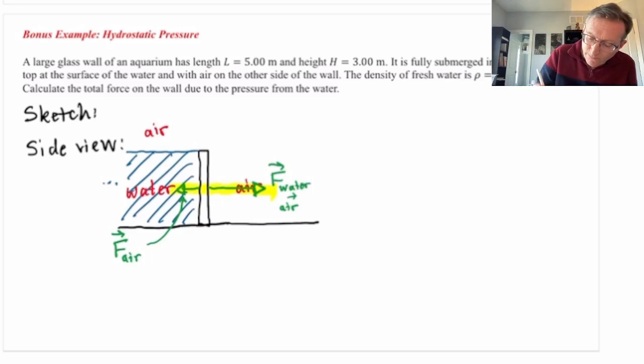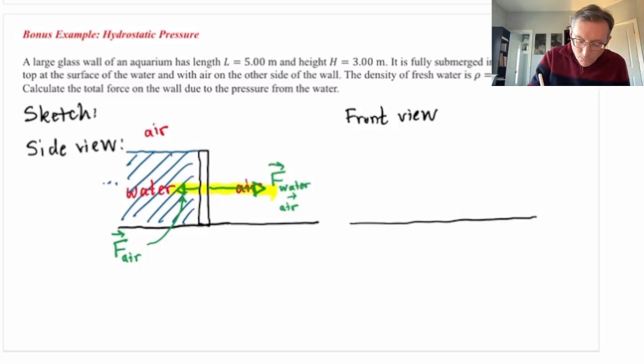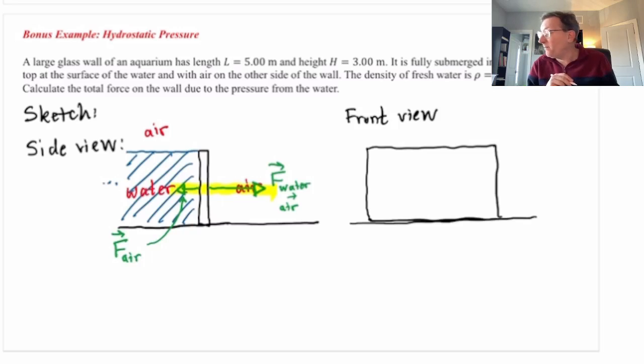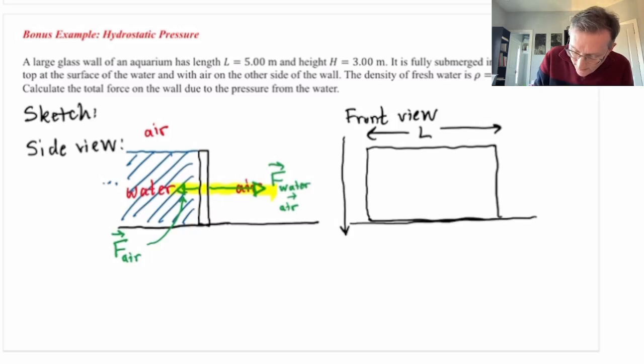Now let me also draw what I'll call a front view. So there again is the floor. And now when I look at it from the front, this aquarium wall has all the water behind it as we look at it from the front. It's got a total length L, and it's got a total height H. And I'm going to draw a y-axis pointing down, let's say plus y is downward with y equals 0 at the top and y equals H at the bottom. I took the plus y-axis down. Why did I do that?